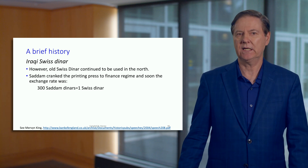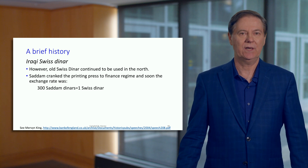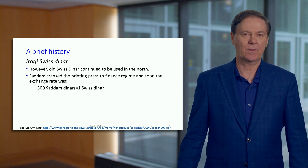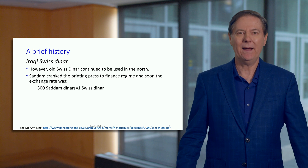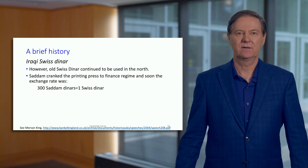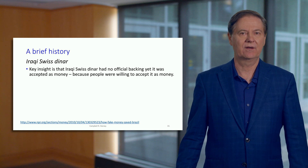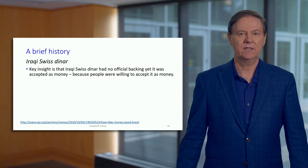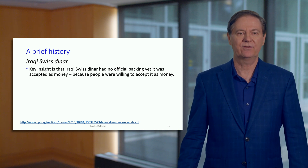Saddam Hussein in the south was desperate for money to pay for various things, so they decided to inflate — they kept printing the new dinars. At some point, the exchange rate was 300 Saddam dinars for one of the old unbacked Iraqi Swiss dinars. The point is that it is possible to have value even though the currency isn't necessarily backed by anything. The Iraqi Swiss dinar continued to be used and had value even though technically it was unbacked by the central bank of Iraq.